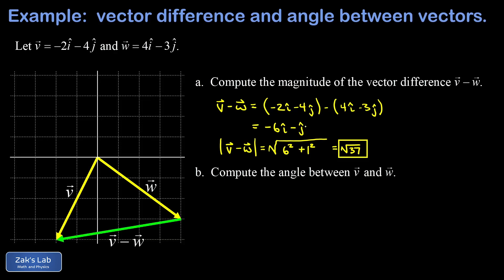Going back to the component form of this vector difference, it's -6i-hat - j-hat. We see that in the picture. Starting from the tail of v - w, we go six units to the left and down one unit. That's -6i-hat - j-hat. And the length, given by the Pythagorean theorem, is the same √37.